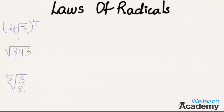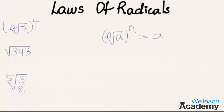The first example is the 4th root of 7 whole power 4. This can be written in simplified form using the law of radicals: the nth root of a whole power n is equal to a. So the 4th root of 7 whole power 4 is equal to 7.